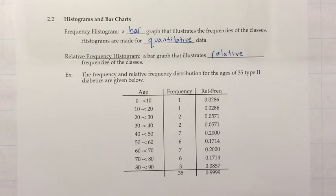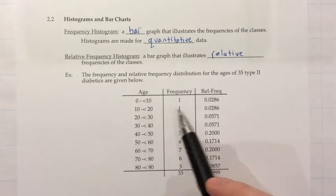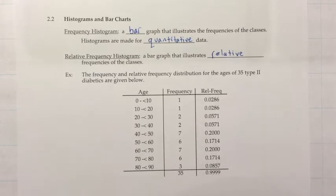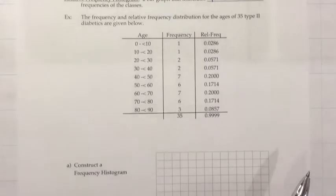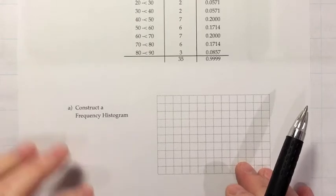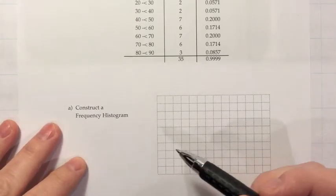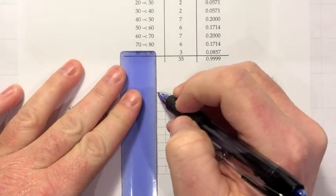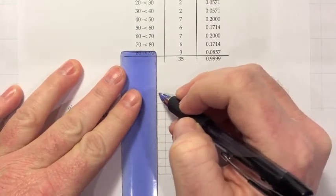The frequency and relative frequency distribution for the ages of 35 type 2 diabetics are given in the table. We have the class 0 through less than 10 with one person, and 60 through less than 70 with 7 people for 20% of our sample. They want us to construct a frequency histogram. Since it's a frequency histogram, the height represents frequency, so I'll draw a vertical axis on the far left.